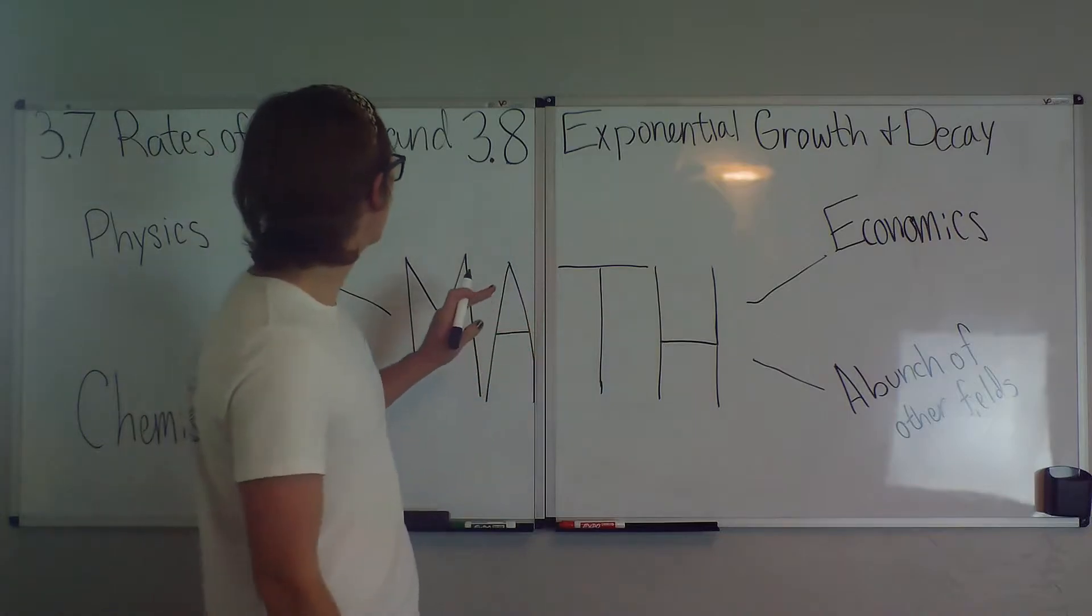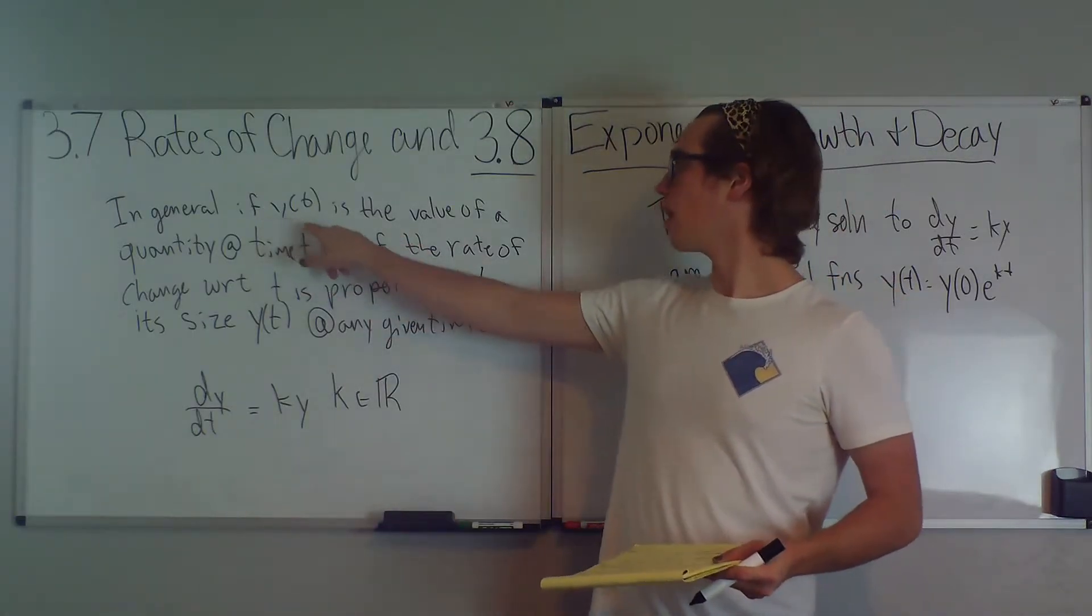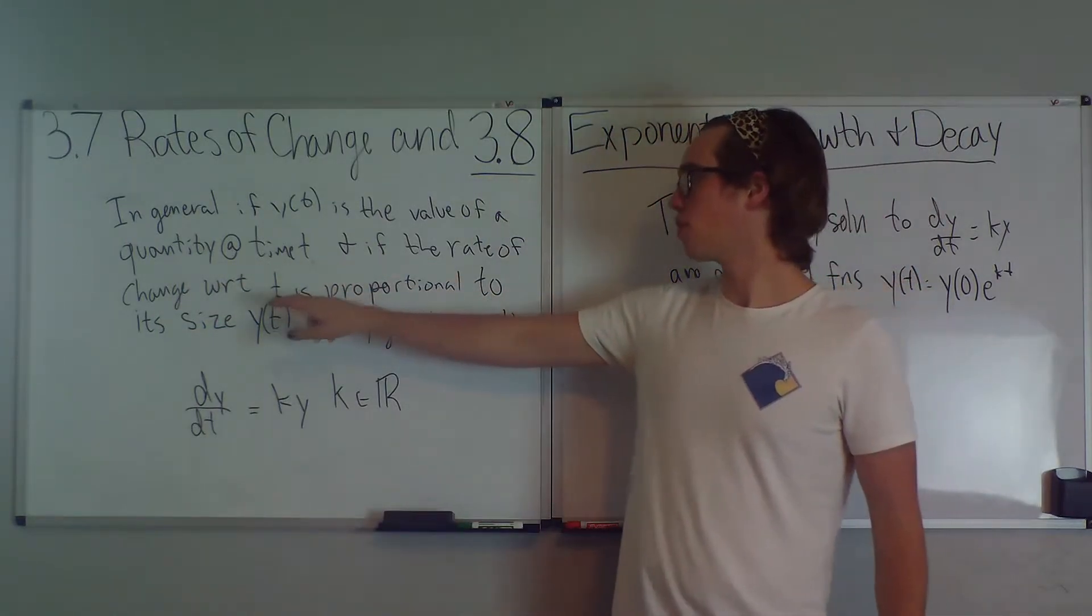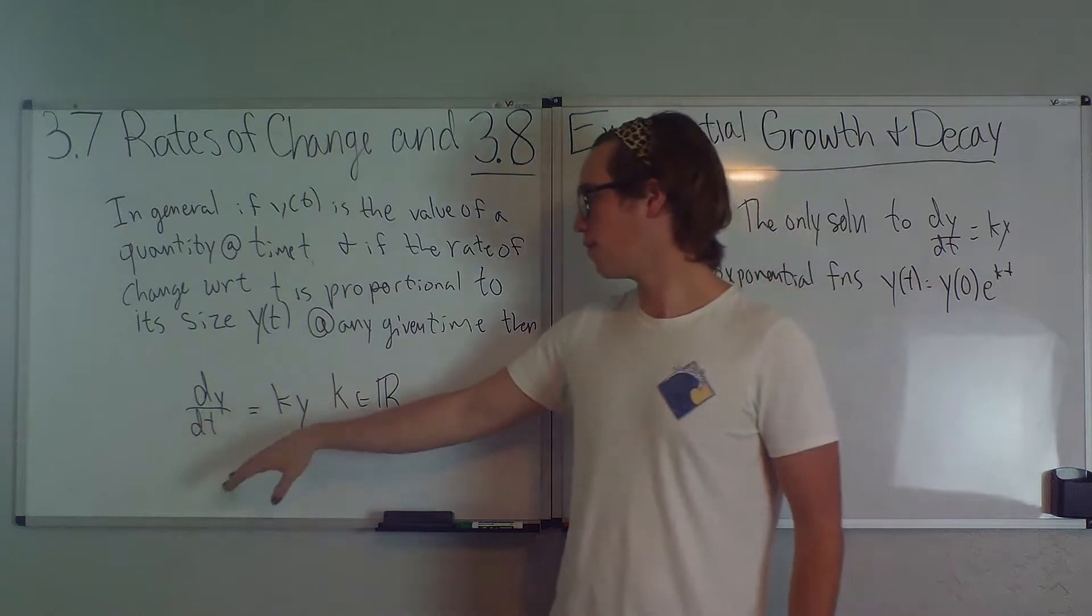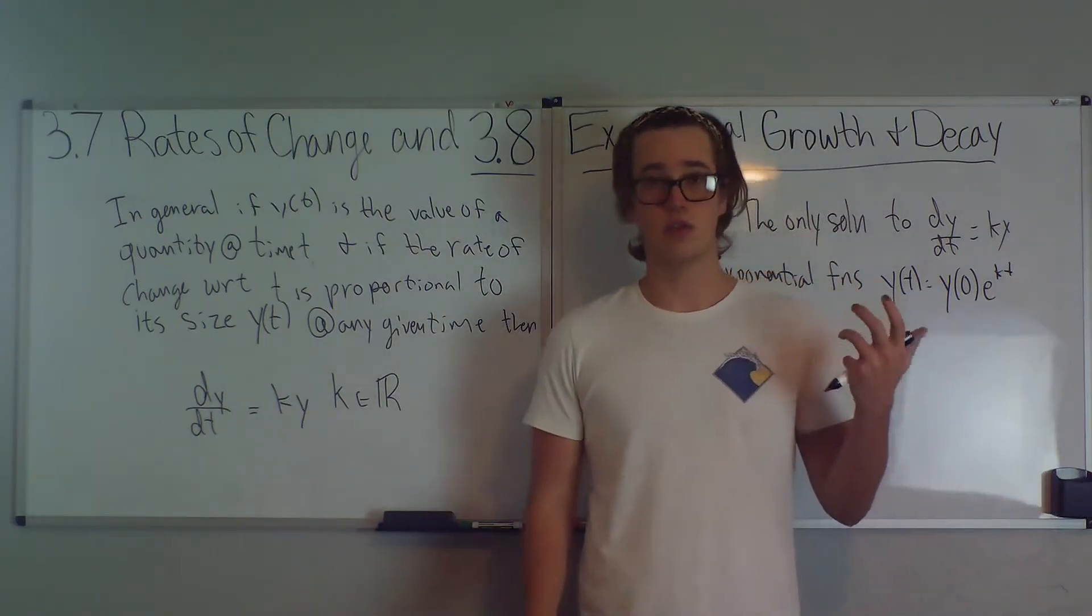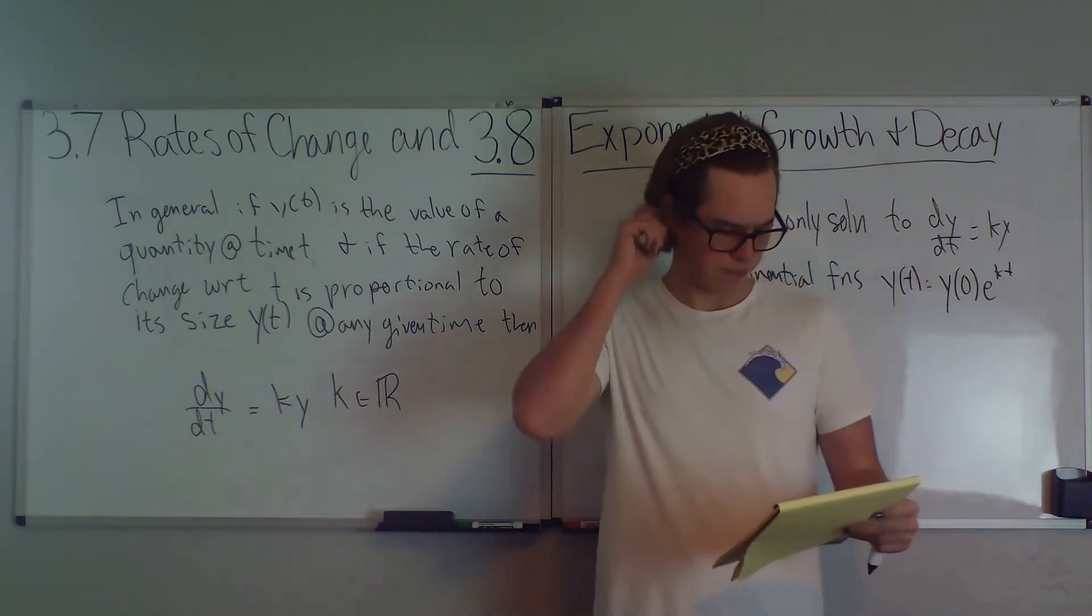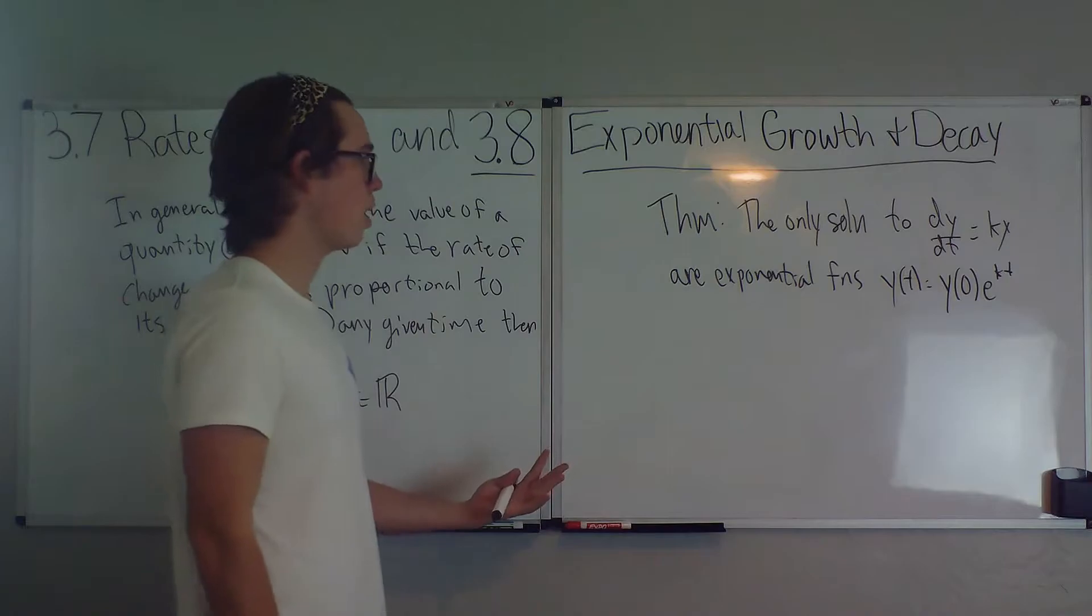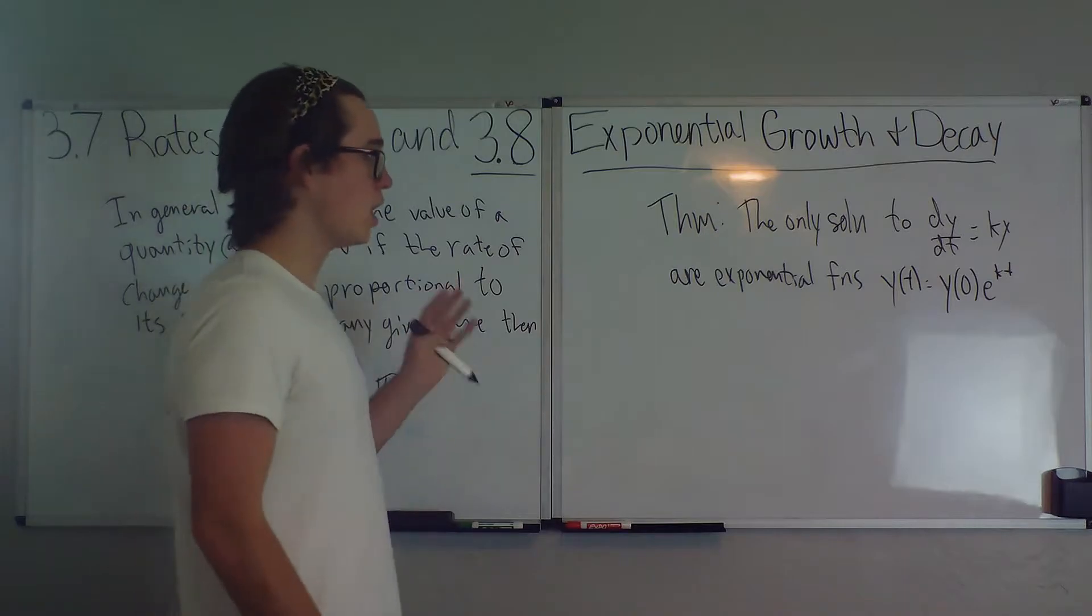So now, let's get into section 3.8, exponential growth and decay. In general, if y of t is the value of a quantity at time t, and if the rate of change with respect to t is proportional to its size y of t at any given time, then the derivative of y of t, dy dt, is equal to ky, where k is in R. And this is often called the law of natural growth, if k is greater than zero. And then if k is less than zero, it's called the law of natural decay. So now we have a theorem that comes from this, and it just states the only solution to dy dt equals ky are exponential functions such that y of t is equal to y naught e to the kt power.